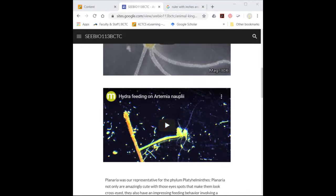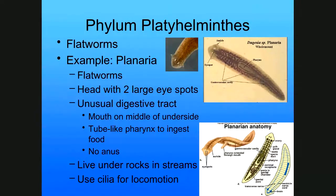The next thing we were supposed to see in class were planaria. Planaria is our example of phylum Platyhelminthes. I think they look adorable with those cross-eyed eye spots. There are three interesting things about planaria: the eye spots, the chemosensors, and the pharynx.